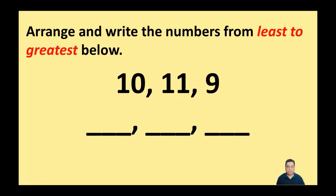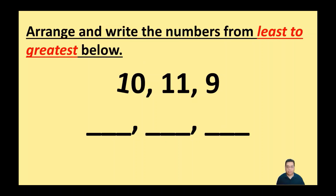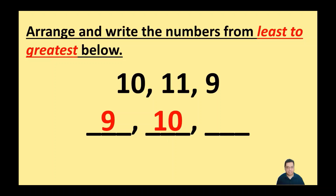Again, we're just going to arrange and write these numbers from least to greatest below. I've got these three numbers here and which one am I going to put first? That's right, nine. And then what will follow that? Yes, 10, and then the other number is going to be — yep, it'll be 11.